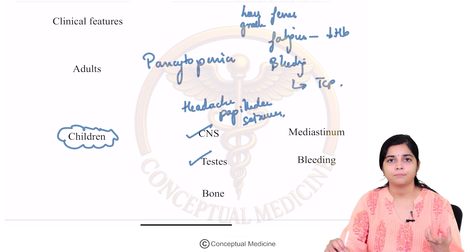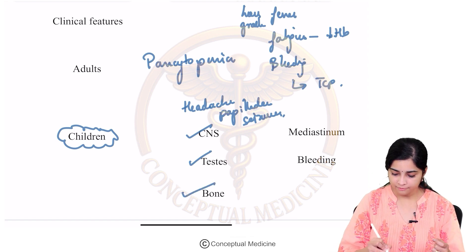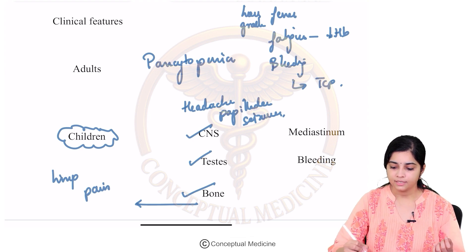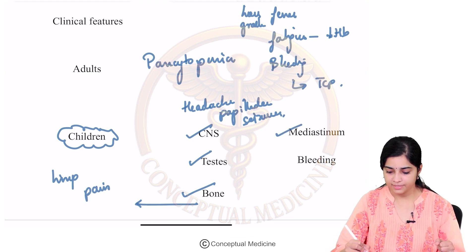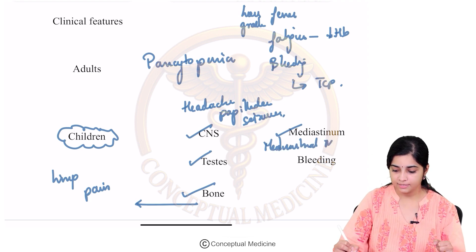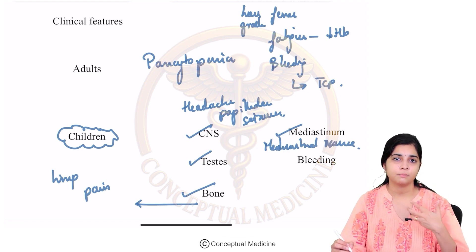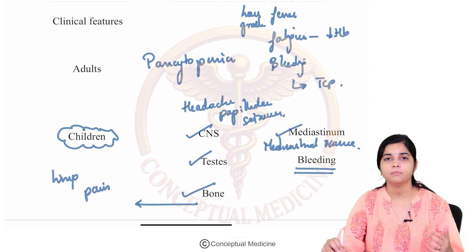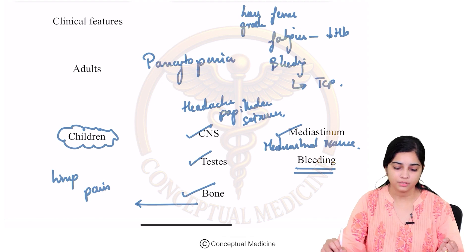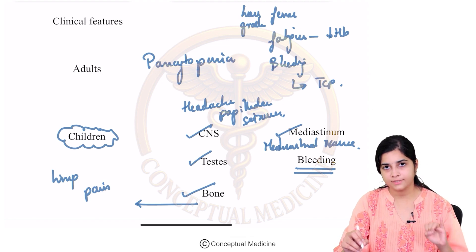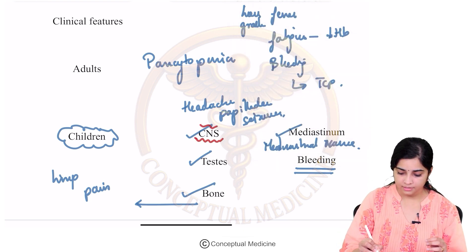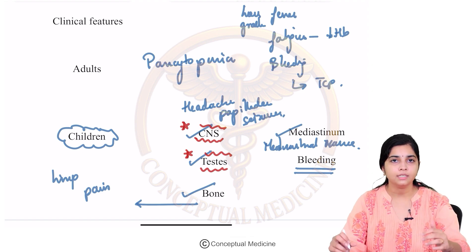Testicular involvement can present with testicular pain or a mass-like lesion. Bony involvement is a feature in children — patients can present with a limp or pain while walking, especially in the long bones. ALL can also present as mediastinal masses with mediastinal widening, causing tracheal compression, breathlessness, or stridor. Bleeding manifestations are also very important due to associated thrombocytopenia. CNS and testicular involvement are features characteristically different when comparing ALL to AML.